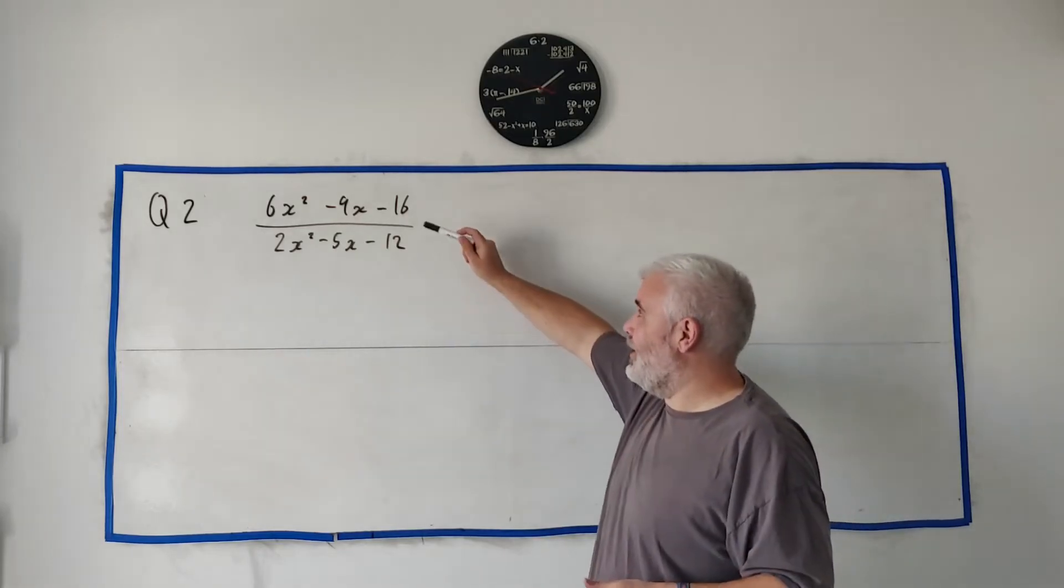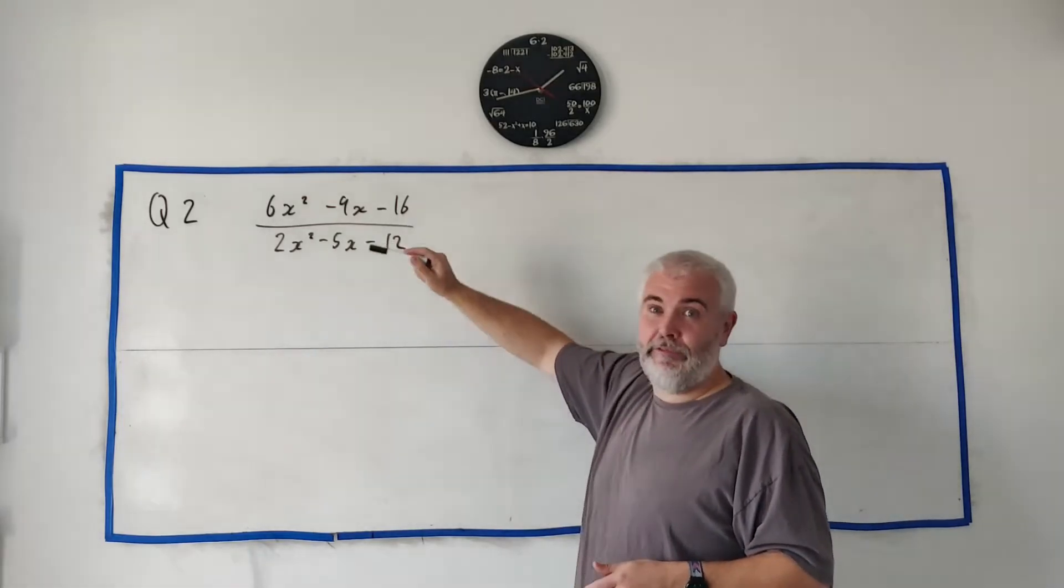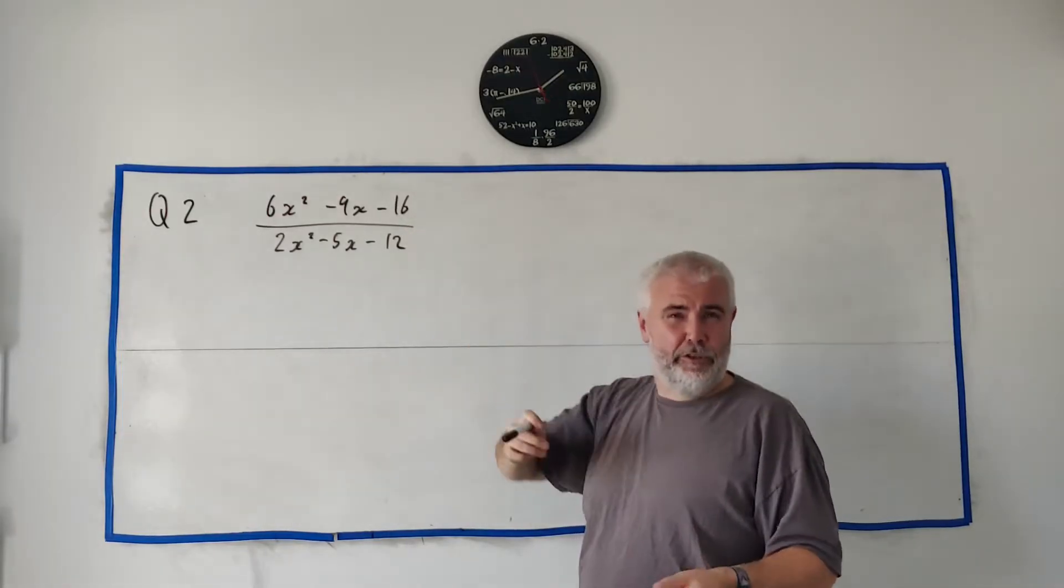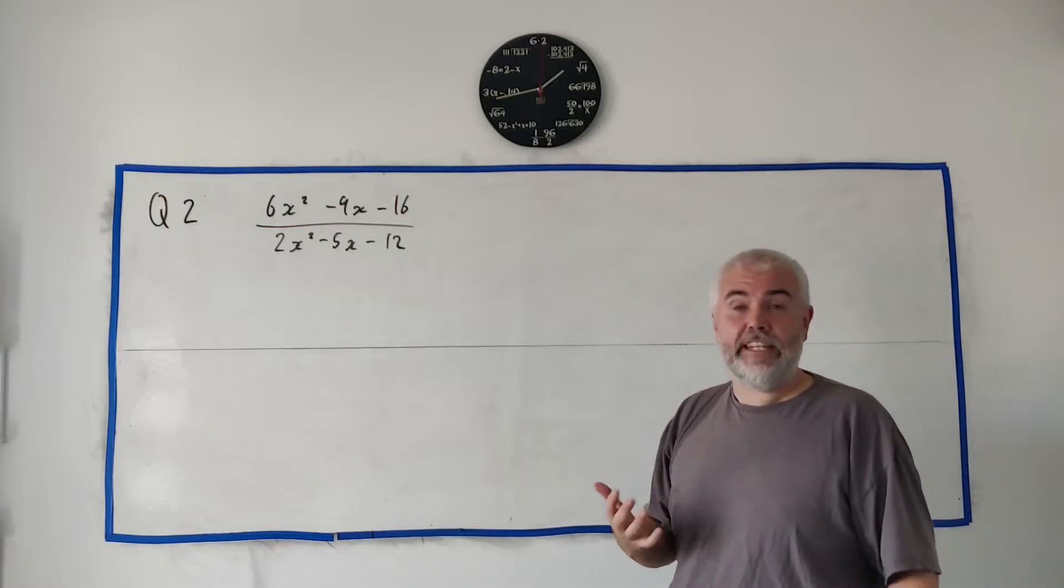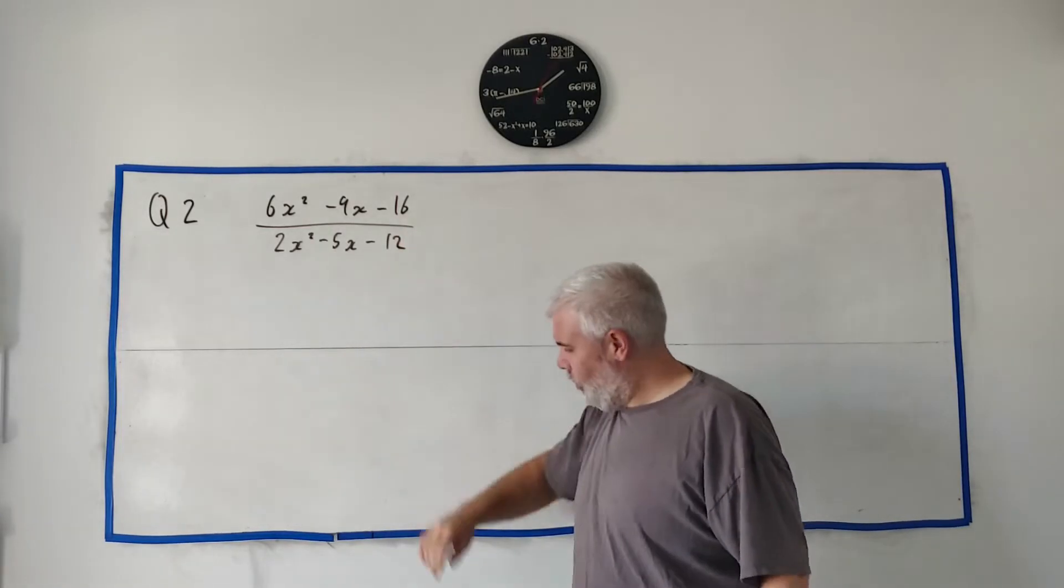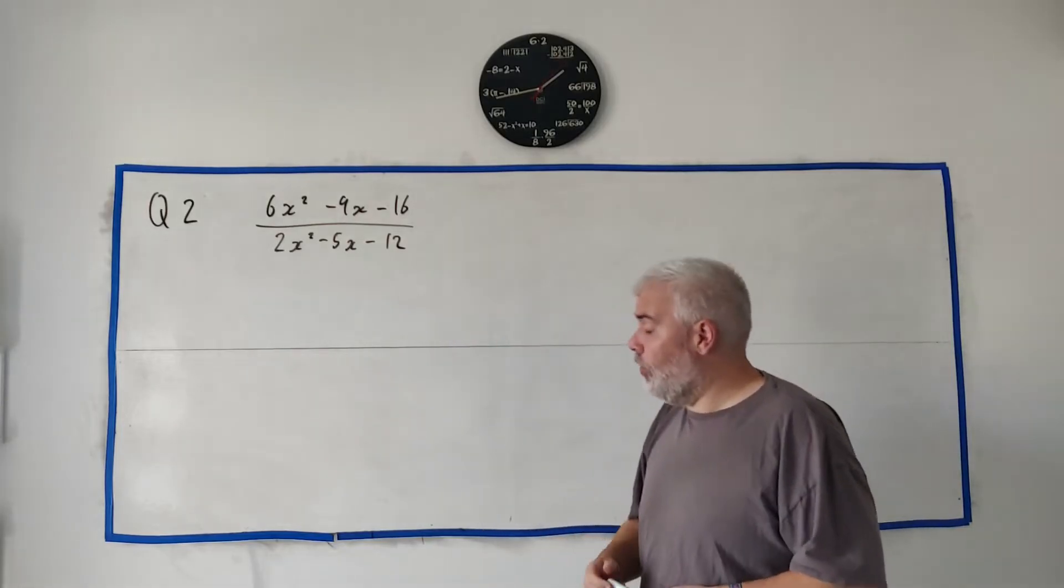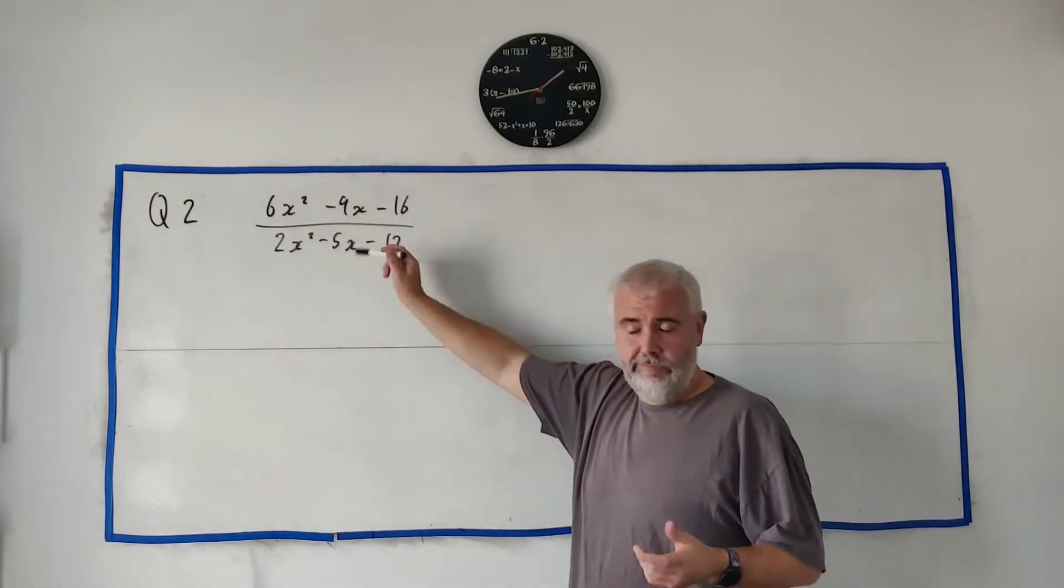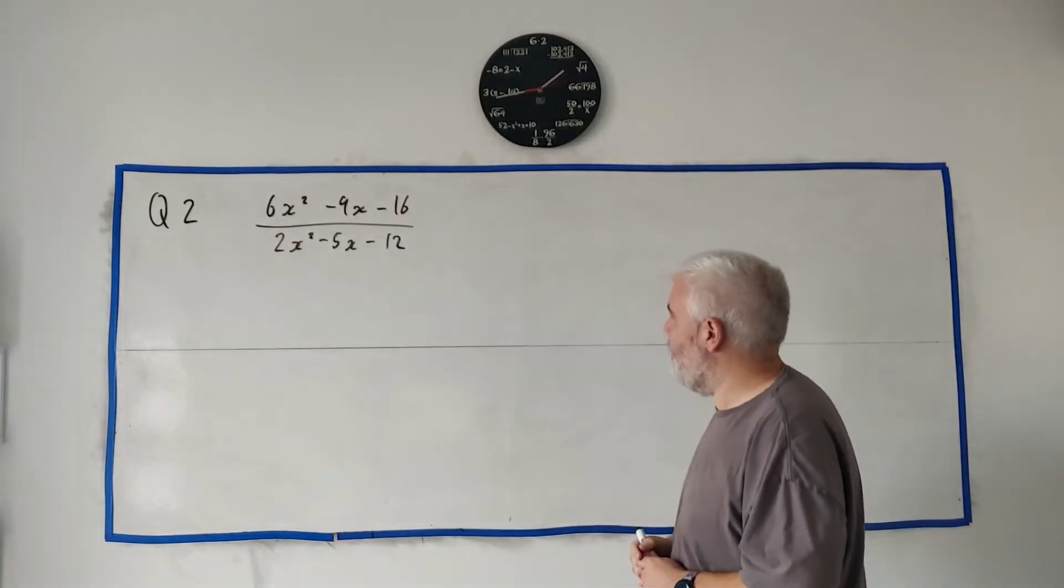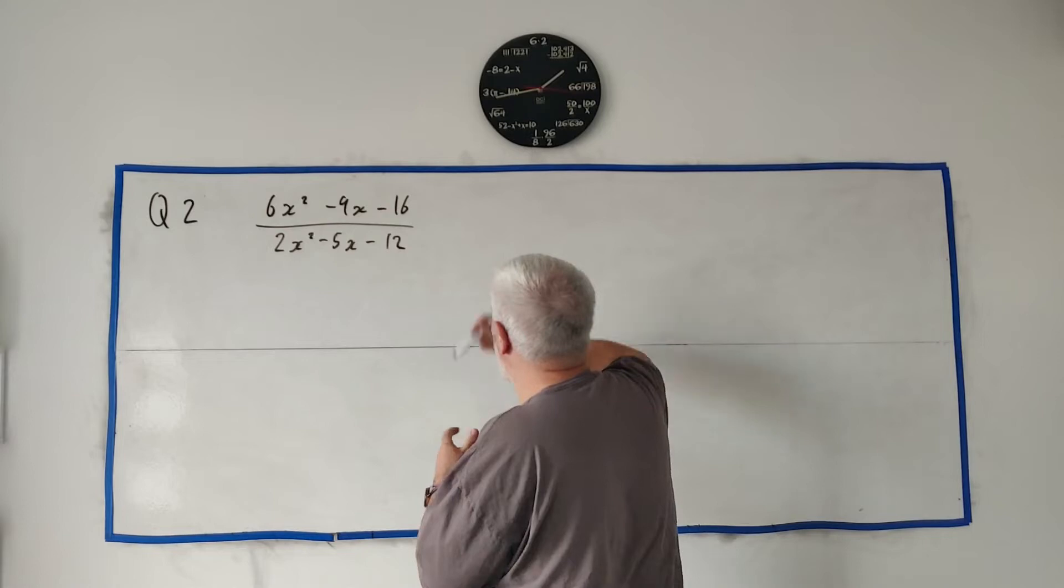I'd advise maybe using the minus B formula, B squared minus 4AC, square root of it, on both of them. See if you get something neat. Top row you won't. Bottom row you will. I think it's square root of 121, which is 11. So we will find factors on the bottom row that are nice and neat. Okay, with that said, let's factorize the bottom row.